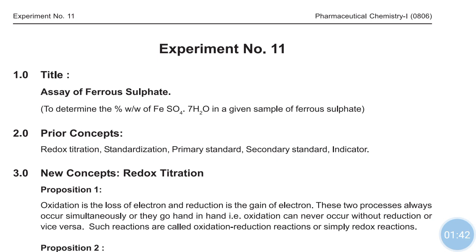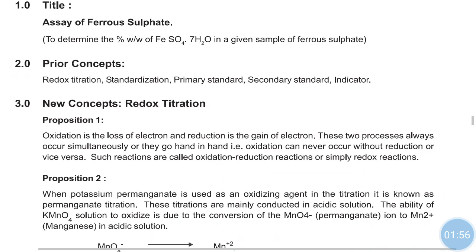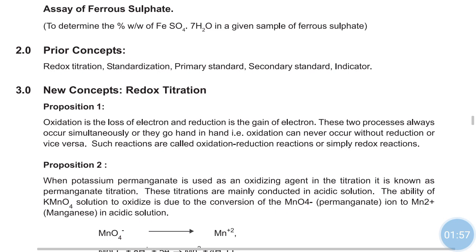Reduction means it is a gain of electron. When these two processes occur simultaneously, it is called an oxidation-reduction reaction, or it is called a redox titration. This is the assay of ferrous sulfate.